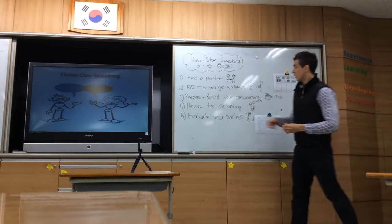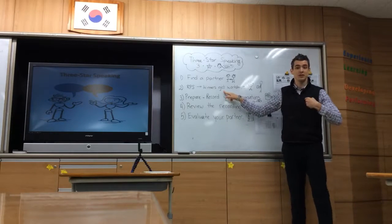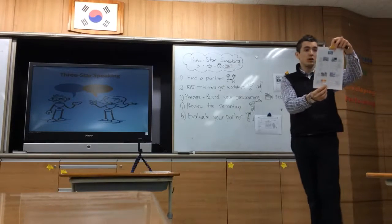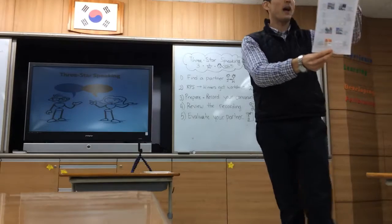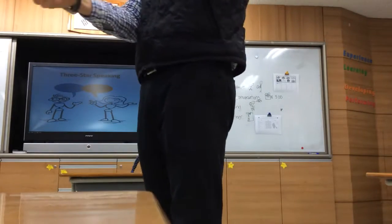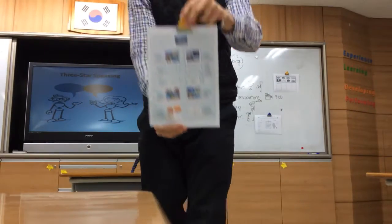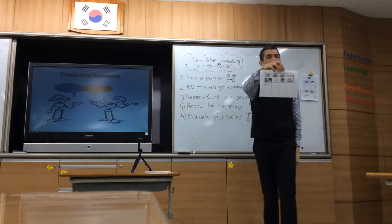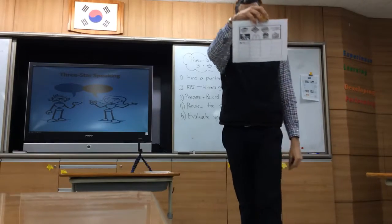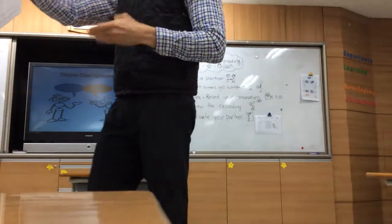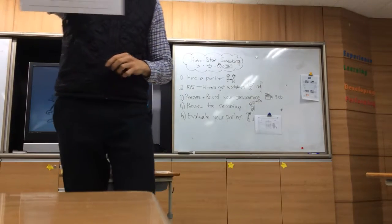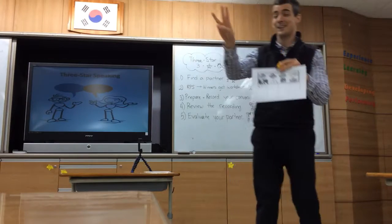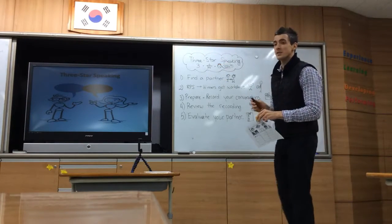Winners, you have to come to the teacher and get two different worksheets. This is the conversation flowchart, or conversation tree — these are the questions that you need. And this is your scoring worksheet, to help you score your partner's answers. On this paper, you can see how many stars — three. That's right. Look at the TV and I will show you how to get three stars.